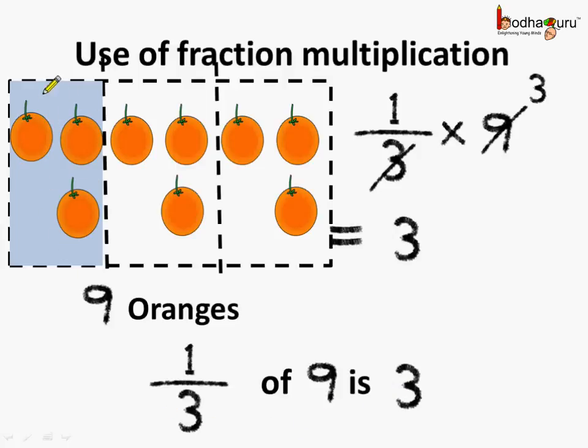Look here — just 3 oranges when we find 1 third of 9.